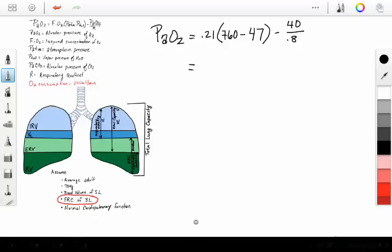Now, what will this equal? Well, this is going to equal 0.21 times 713 minus 50, because 40 divided by 0.8 is 50. This is going to equal roughly 150 minus 50. So our PaO2 in our alveolus is 100 when we're breathing room air.